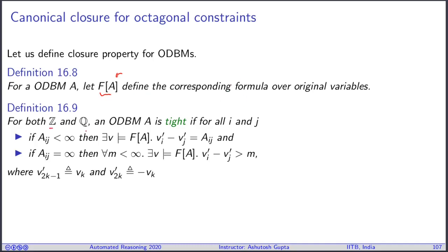For both integer and rational numbers, an ODBM is tight for all i and j if aij is less than infinity, then there exists an assignment such that v'i minus v'j equals aij. Similarly, if you have infinite, then you have an unbounded value you can reach for the difference of these two variables.